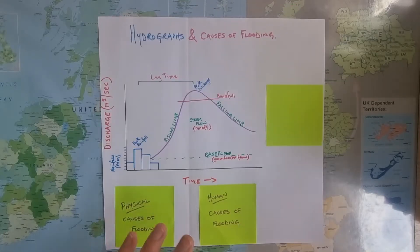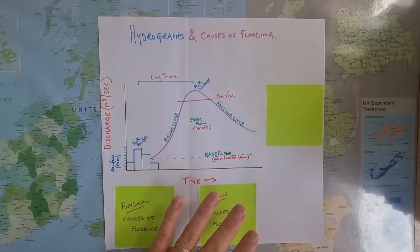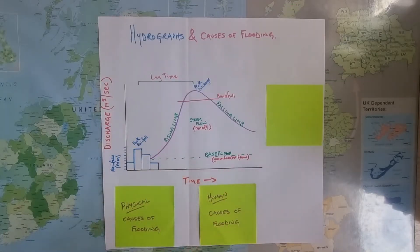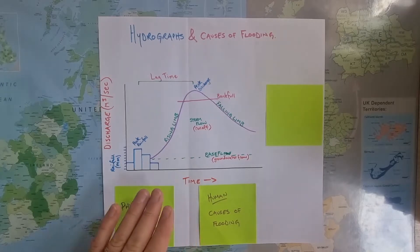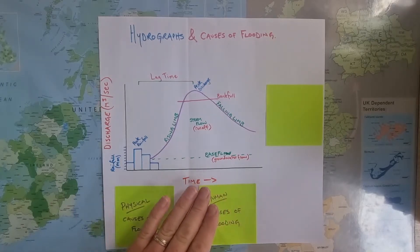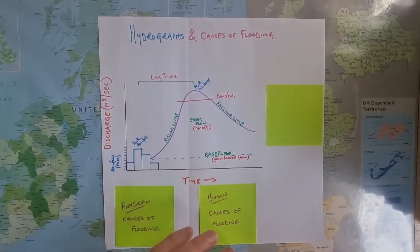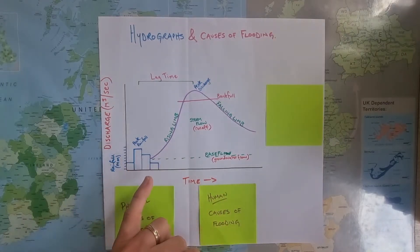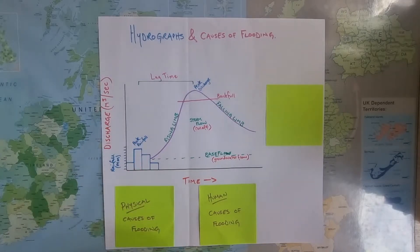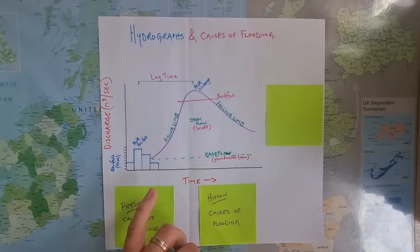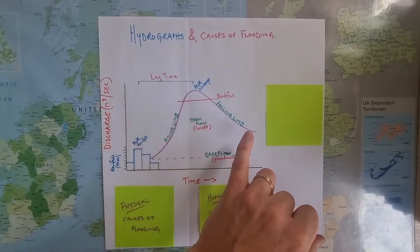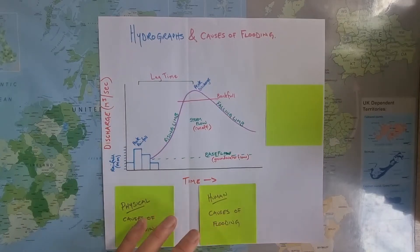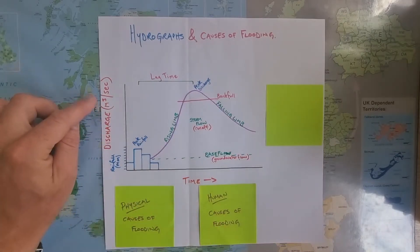So first of all, what is a hydrograph? Essentially, this is a graph with time on the x-axis along the bottom here, showing a storm event, which is these rainfall bars, and then the resultant change in the river in terms of how much water is in it. This is the purple line — the discharge, measured in cumecs.